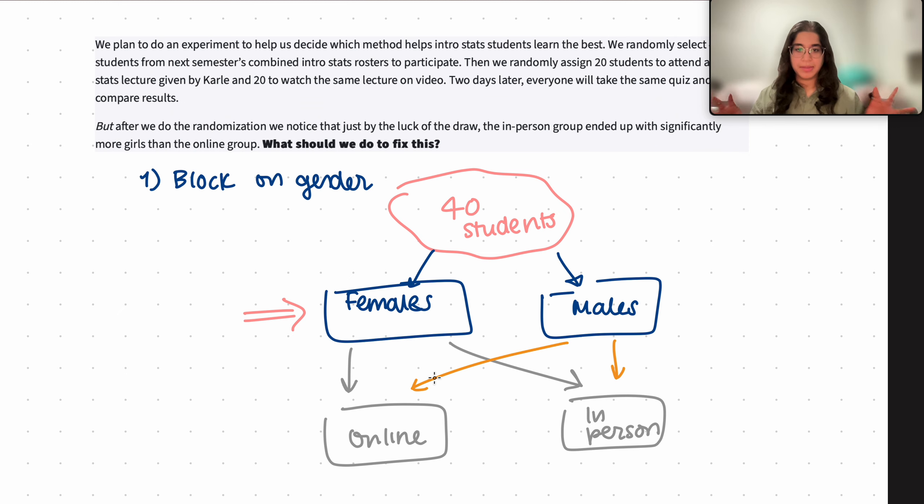Because we are first blocking based on gender and then doing that random assignment, randomly assigning 50 percent of the females to online and 50 percent to in-person, and doing that for the rest of the groups that we blocked on, in order to make sure that each of our control versus experimental groups has an equal proportion of that sample that we first chose.